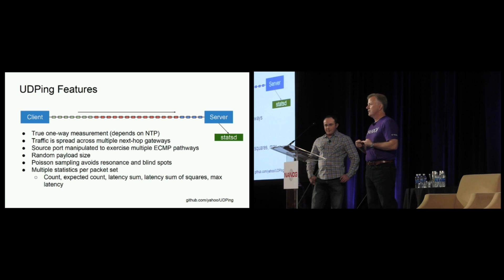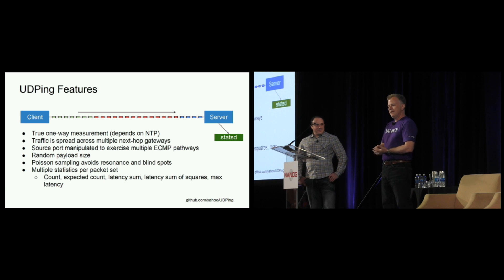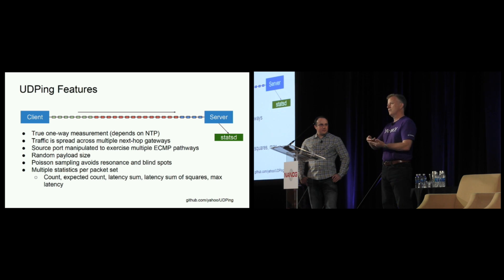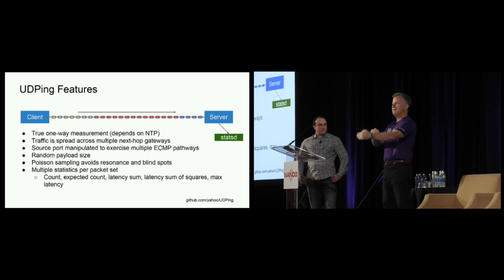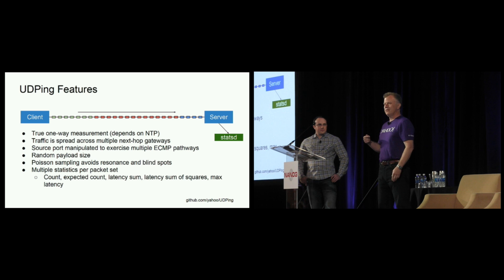We randomize the payload size so you can detect MSS failures — you can push right up to your MSS and see if it makes it across or gets fragmented and lost, or if there are issues with a particular packet size. We were also really concerned about resonance. If you emit a packet once a second or every half second, there might be an event that happens at the same interval that just happens to miss or hit every packet. So we use a randomization method called Poisson sampling, based on an exponential curve, which allows random intervals between packets while keeping the emission frequency averaging to a fixed target number.